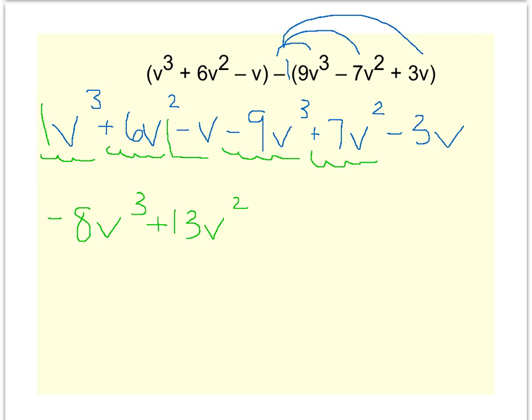Now this guy is a negative v. There's really a one there, so it's negative 1v. And I have a negative 3v. Well, negative one minus three is negative 4v. And I look, I think I've taken care of everything. So negative 8v³ plus 13v² minus 4v is the answer to subtracting those two polynomials.